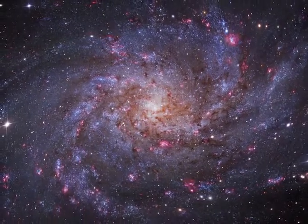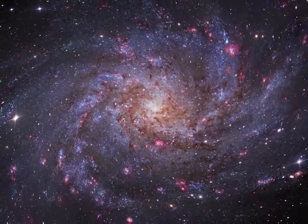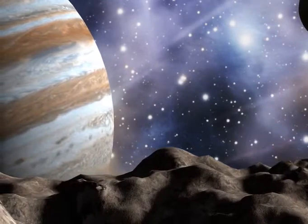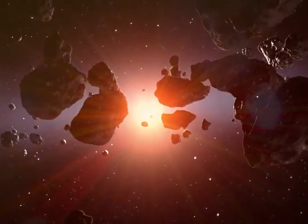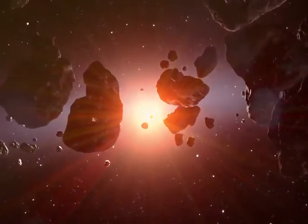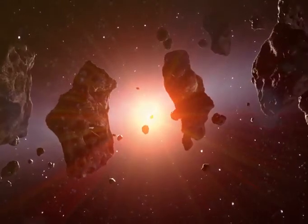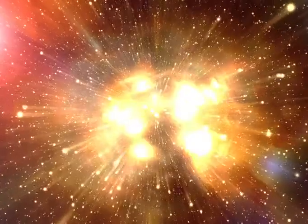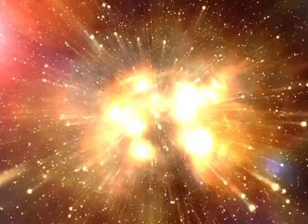Our solar system formed about 4.5 billion years ago from a dense cloud of interstellar gas and dust. The cloud collapsed, possibly due to the shockwave of a nearby exploding star called a supernova. When this dust cloud collapsed, it formed a solar nebula, a spinning, swirling disk of material.